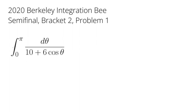Here we have an integral from the 2020 Berkeley Integration Bee, which is the integral from 0 to π of 1 over 10 plus 6 cosine θ dθ. I highly encourage you to pause the video and try this on your own. Just so you have something to aim for, the participants had 4 minutes to do this problem for the semifinal.